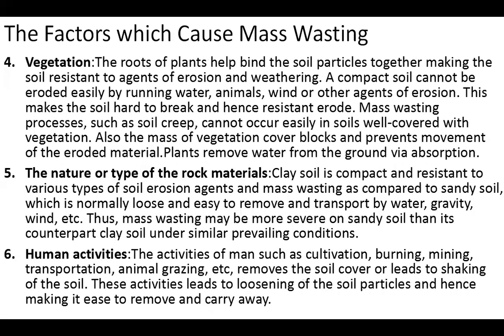Moving on, the fourth factor is vegetation. The roots of plants are helpful in binding the soil particles together, making the soil resistant to agents of erosion and weathering. A compact soil cannot be eroded easily by running water, animals, wind, or other agents of erosion. This makes the soil harder to break and therefore more resistant to erosion.